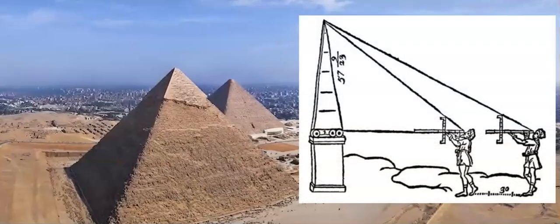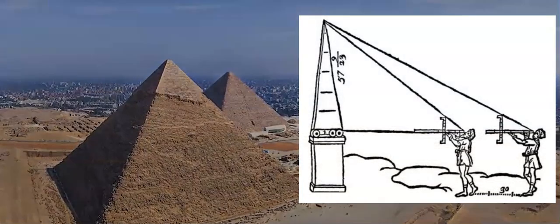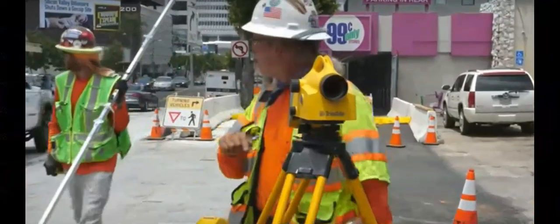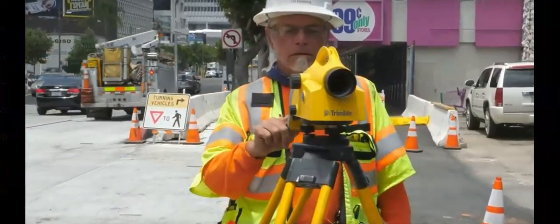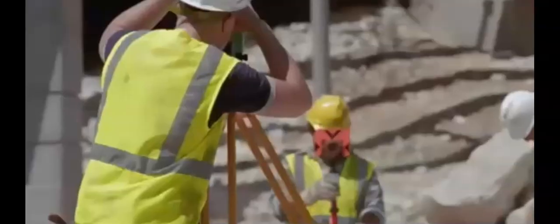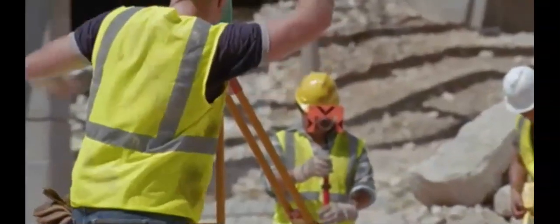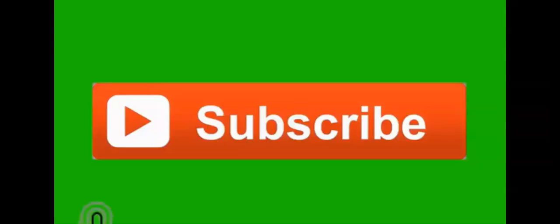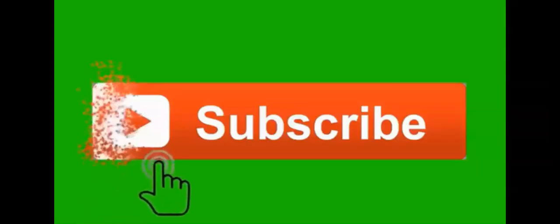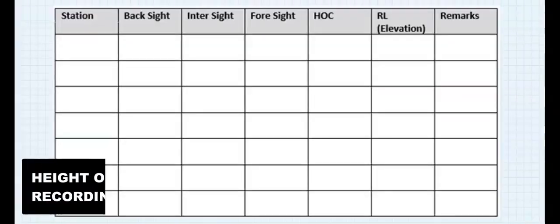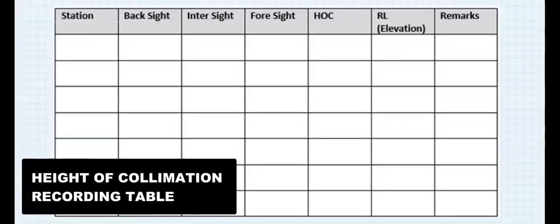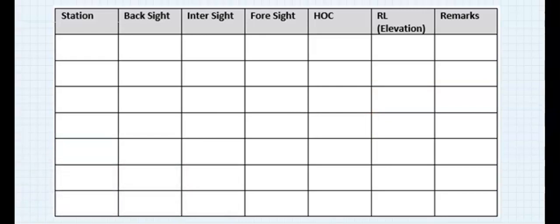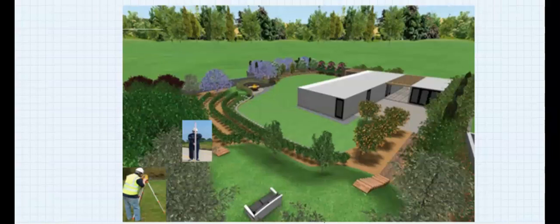Ancient surveying started in Egypt. In this video, you will learn how to tabulate field surveying data. This is a height of collimation table that will enable us to record our field data.